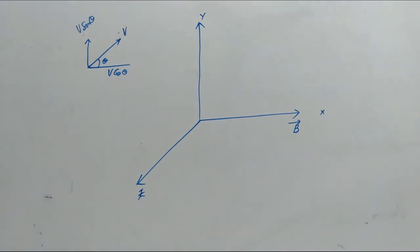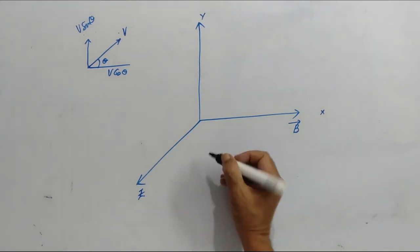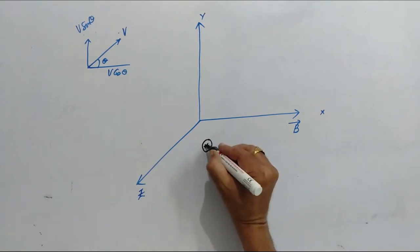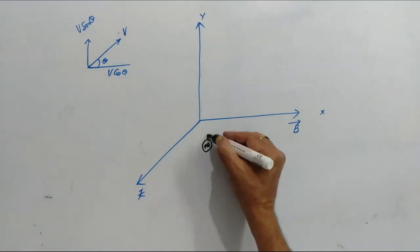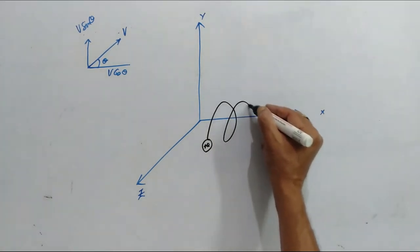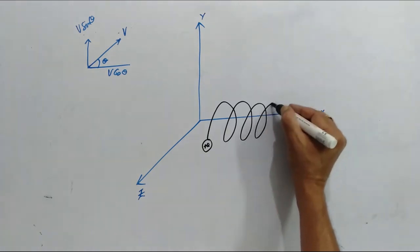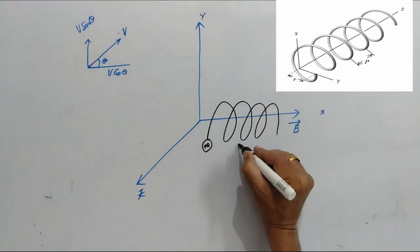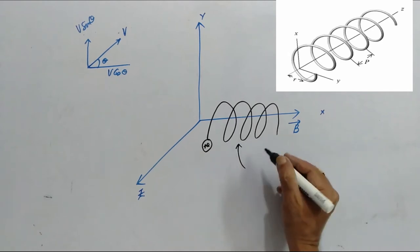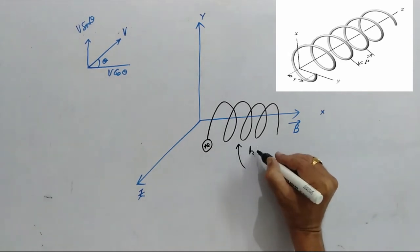Now, if you observe the path, that this is q, the charged particle, it moves like this. This path is called helix or helical path.